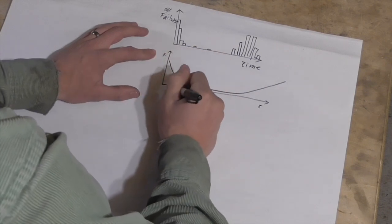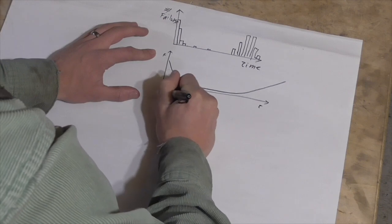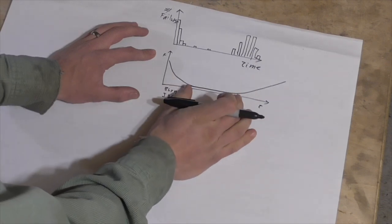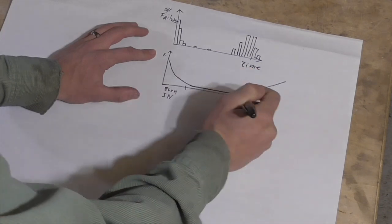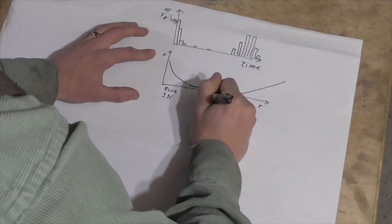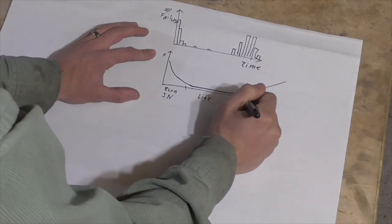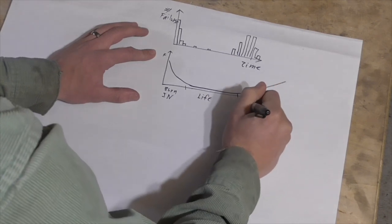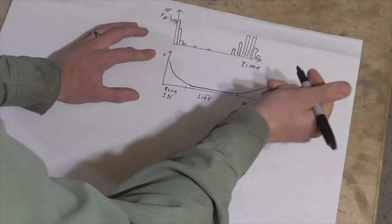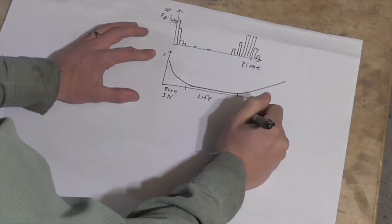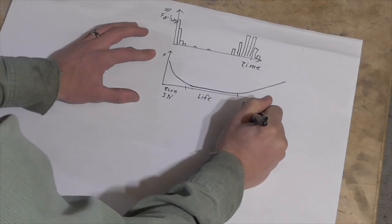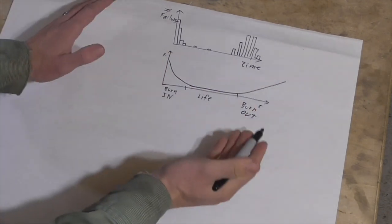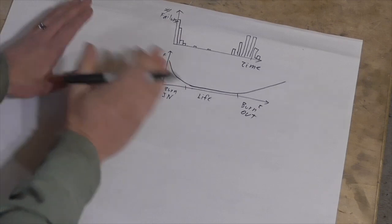This is what we call the burn-in period. Then you'll have a period where the rate of failure is pretty low. And that's the usable life of the product. And then after a certain point, the rate of failure is going to start to increase again. And that's the burn-out period. Or it's the time when the product starts wearing out, just from normal use. And because the shape of this curve kind of looks like the profile of a bathtub, we refer to this as the bathtub curve.